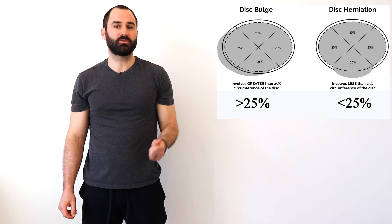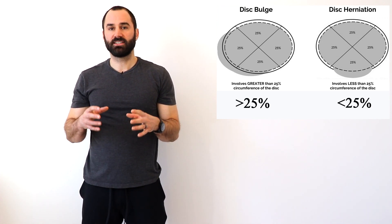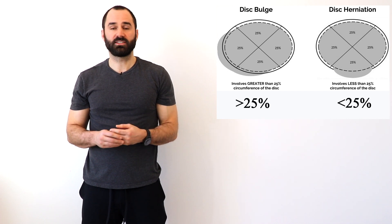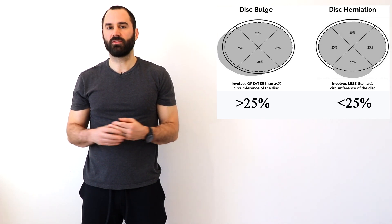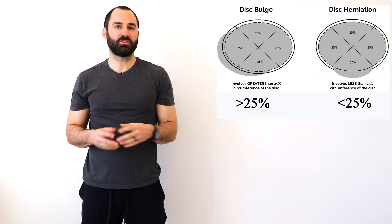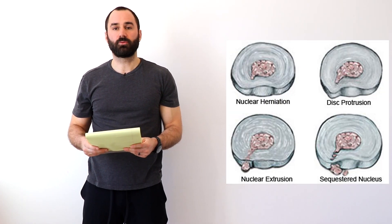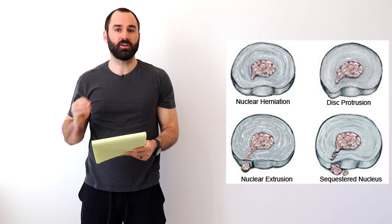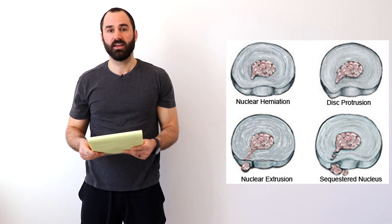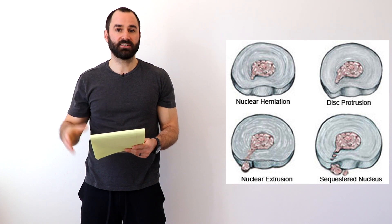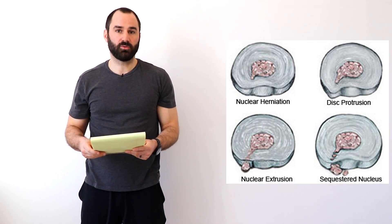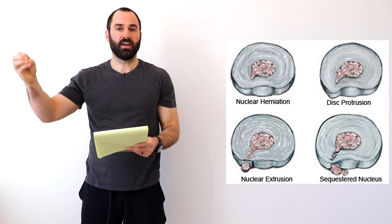One thing we want to know is the difference between a disc bulge and a disc herniation. When the nucleus pulposus inside the disc expands more than 25% of the diameter, it's considered a disc bulge; if it's less than 25%, it's a disc herniation. A bulge may seem worse, but when it expands more generalized it's less likely to press on the nerve; when it's more focalized it's more likely to actually interact with the nerve root. There are three main subtypes of disc herniation: protrusion, where it presses out but does not exit the annulus fibrosis; extrusion, where the nucleus pulposus starts to exit the outer layer of the disc; and sequestration, where the outer part breaks off and becomes its own separate entity.